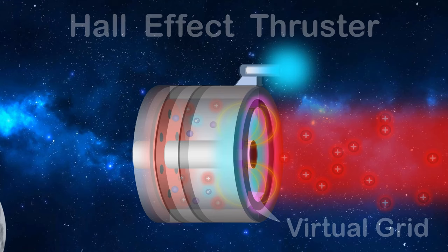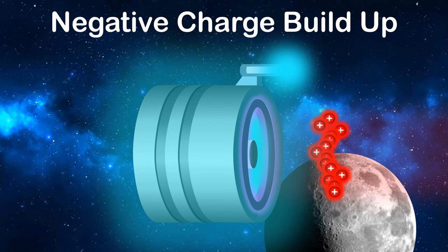As positive ions leave the thruster, a negative charge builds up and pulls the ions back, and if no ions leave, this means there's no thrust. The solution?